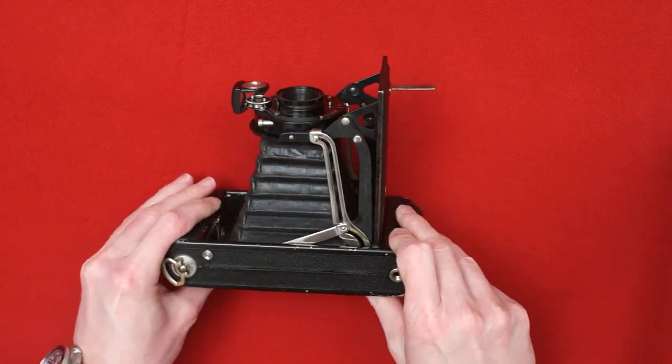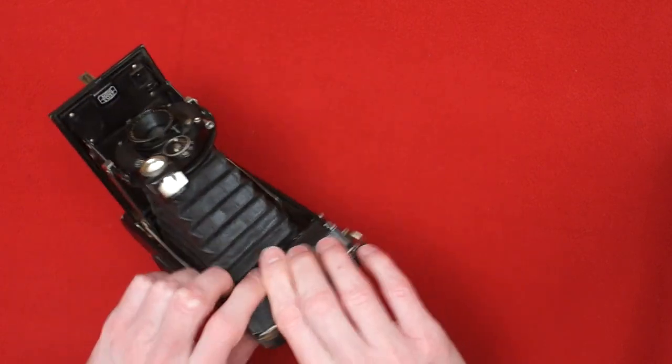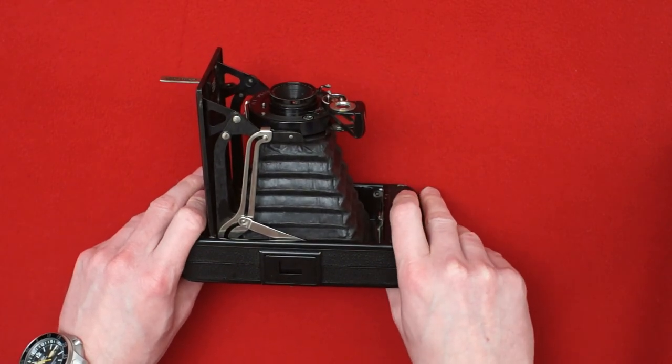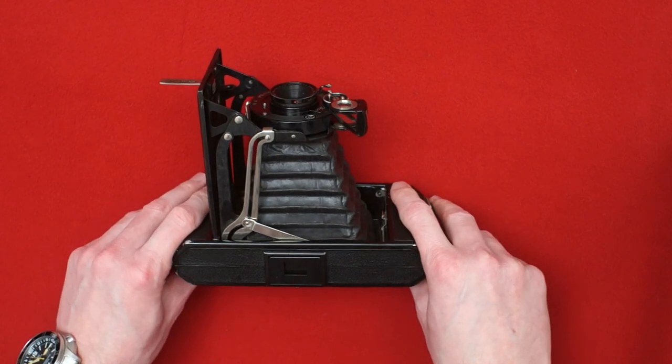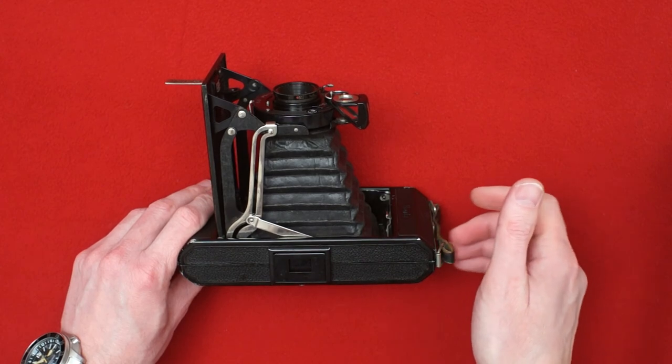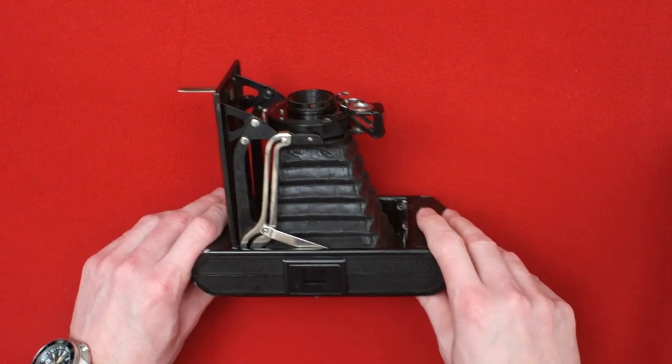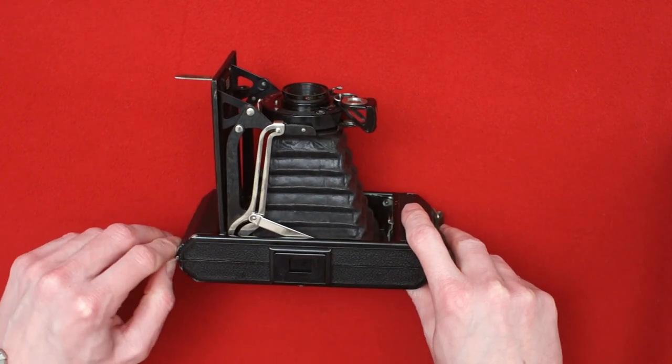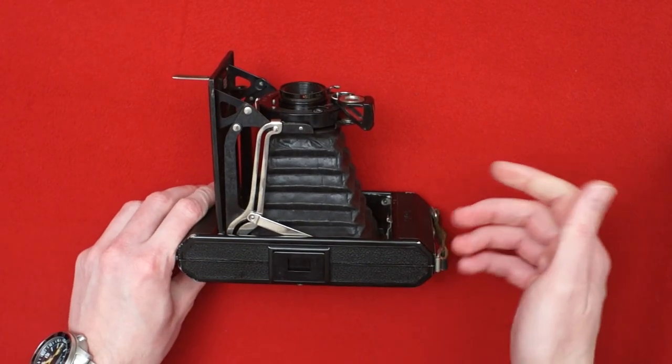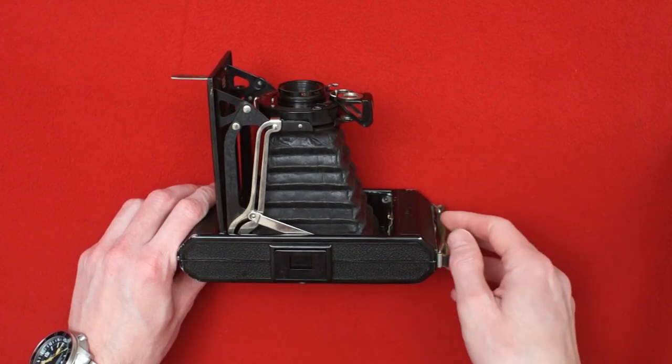So I believe that the Zeiss Icon plant, at least the West German Zeiss Icon plant, produced the last Iconta model in 1959. There was also Zeiss Icon in East Germany. When Germany lost the war, the Soviet territory or the Soviet held territory became East Germany. And the original Zeiss Icon factory was actually in Dresden that ended up in East Germany.